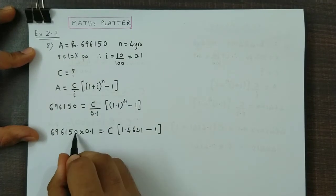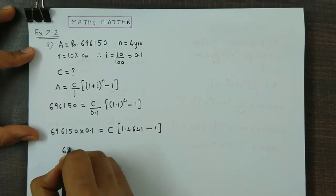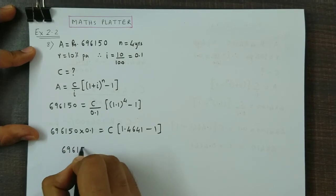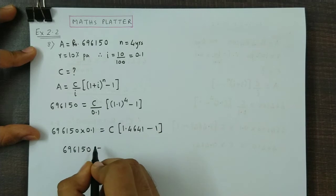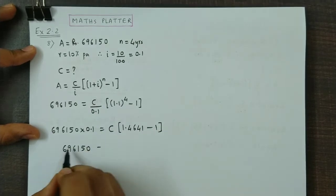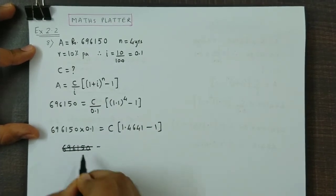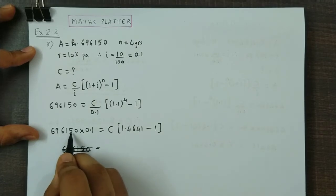This is 1 by 10, so this 0 will cancel. So, this will be 696150, 0 will not come, this will get cancelled. So, basically, you will get 69615.